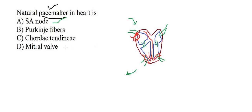The Purkinje fibers are distributed across the ventricles. The chordae tendineae are in the valve area between the atrium and ventricle. The SA node acts as the natural pacemaker and is situated in the right atrium at the topmost area. So option A — SA node — is the right answer.